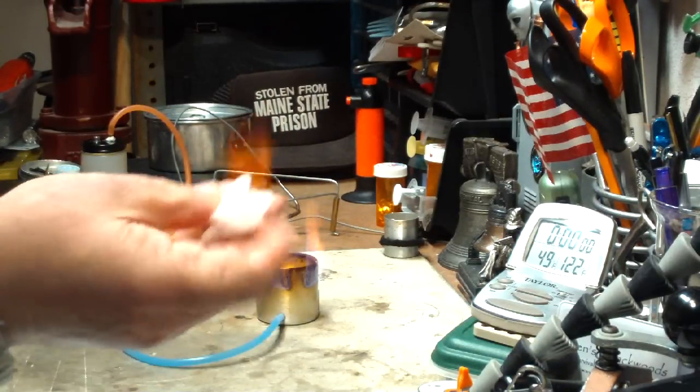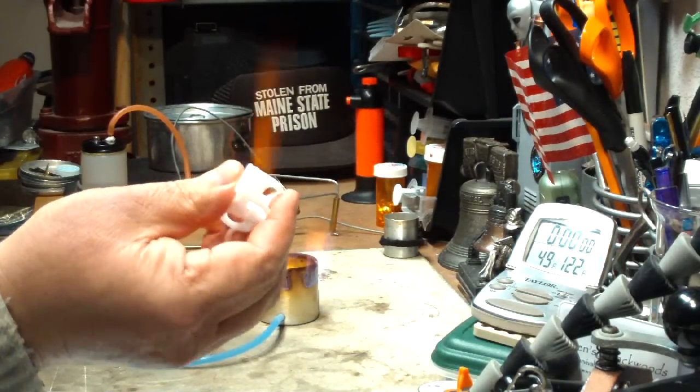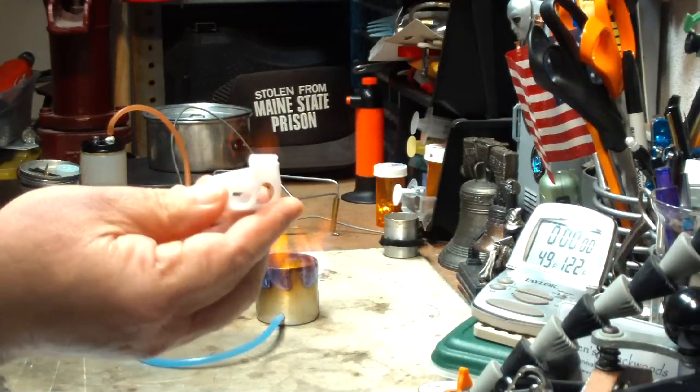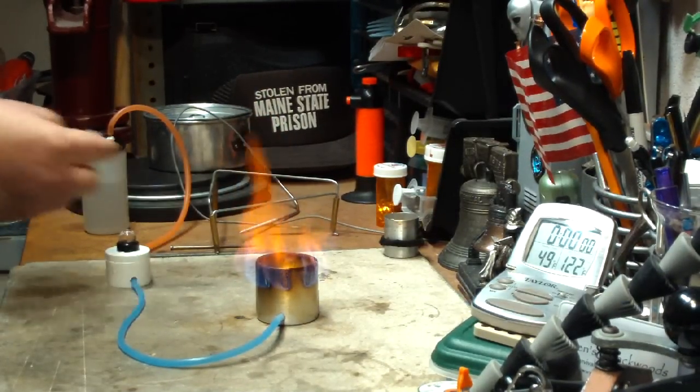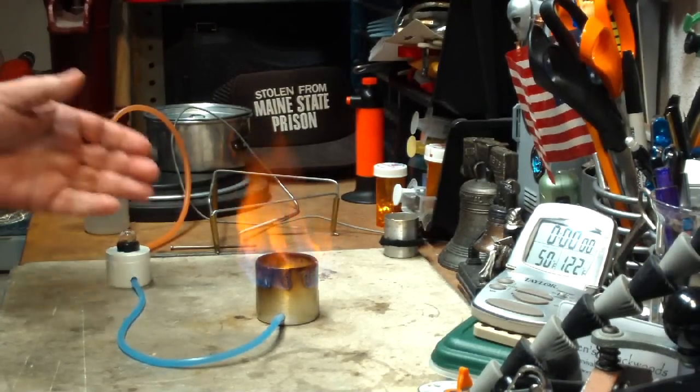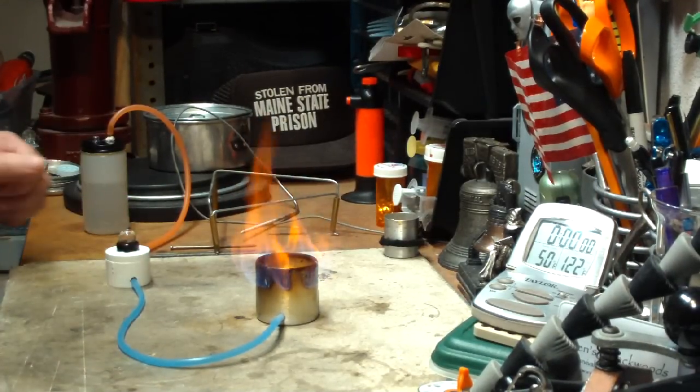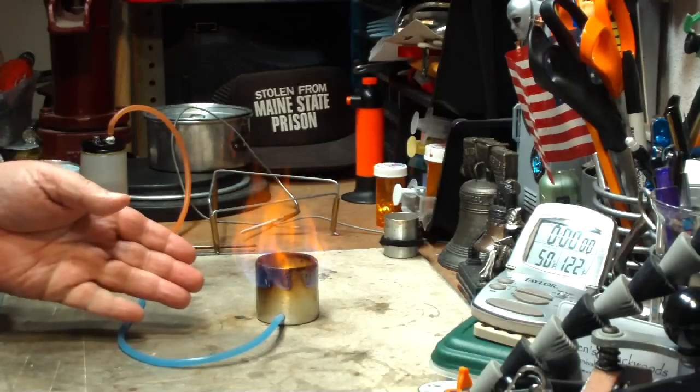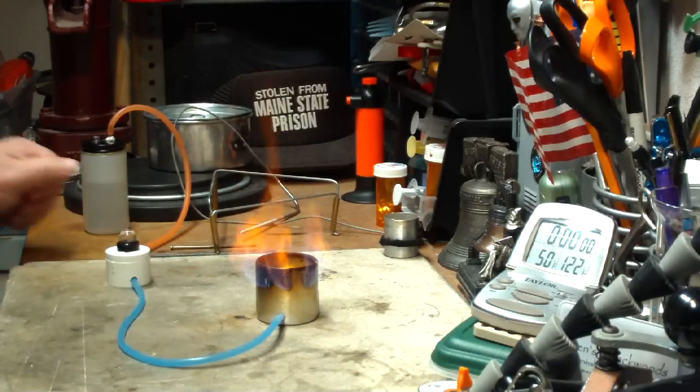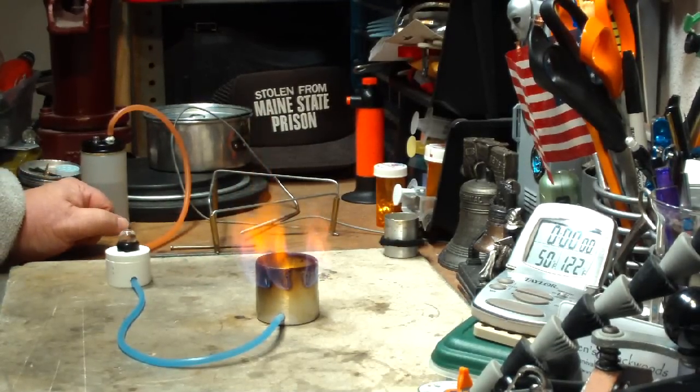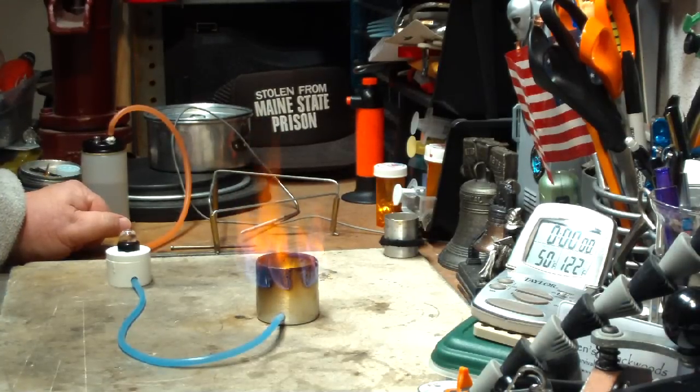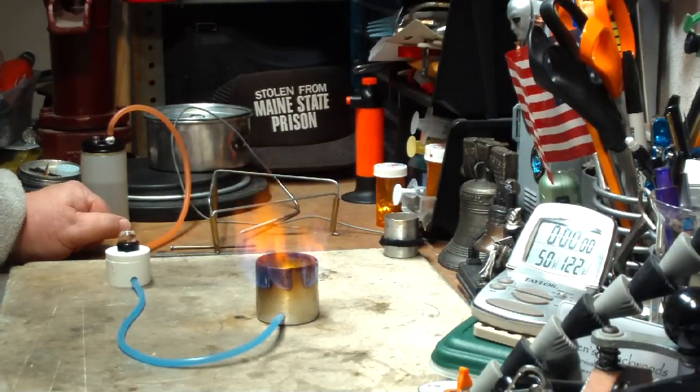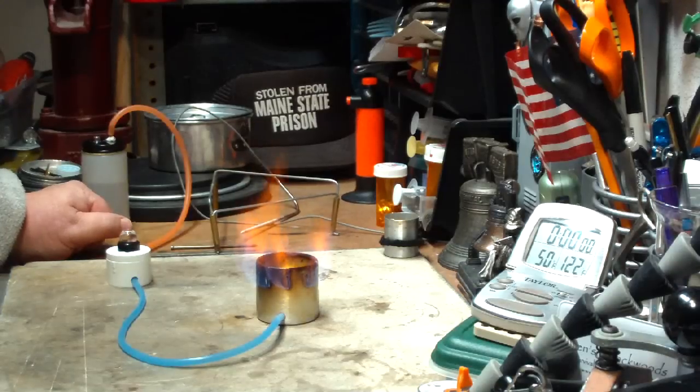It got the water to a boil real fast. Two cups of water starting at 60 degrees came to a boil in under 4 minutes, 3 minutes 57 seconds.